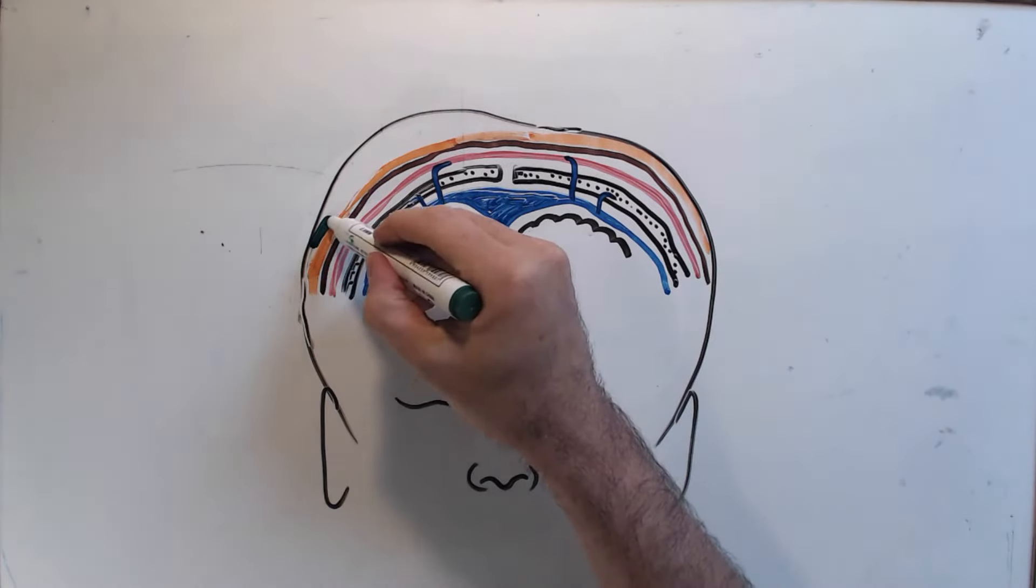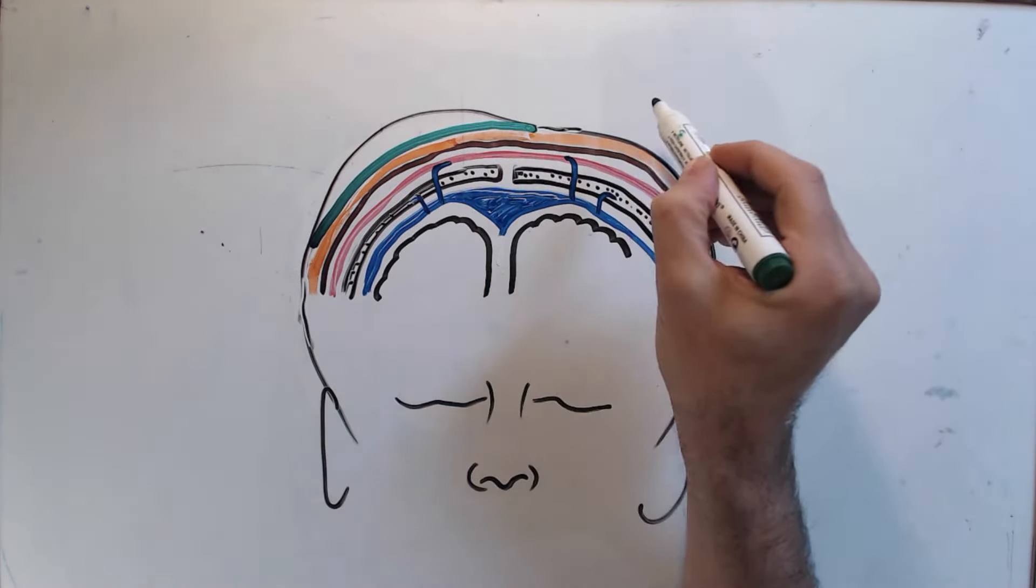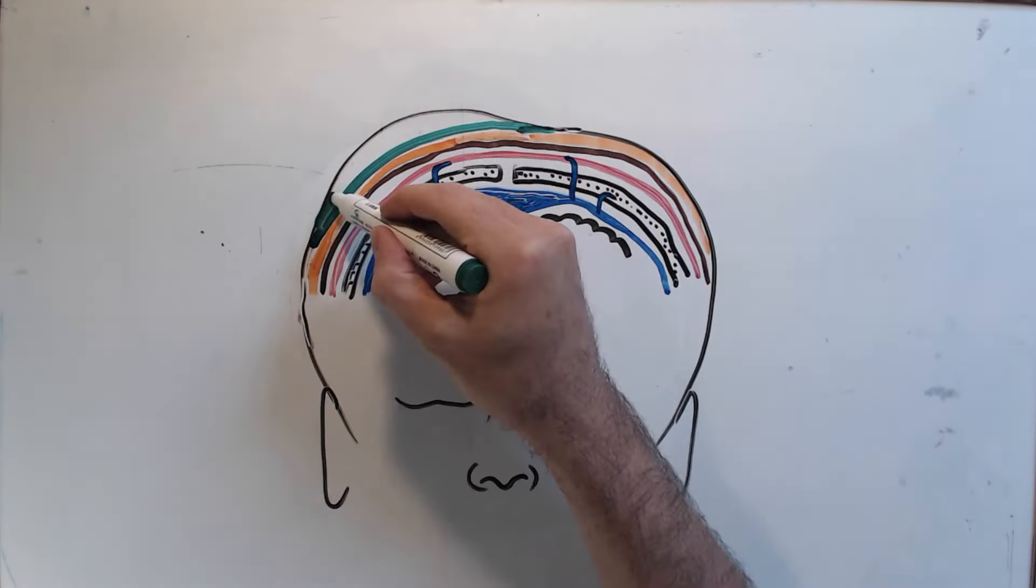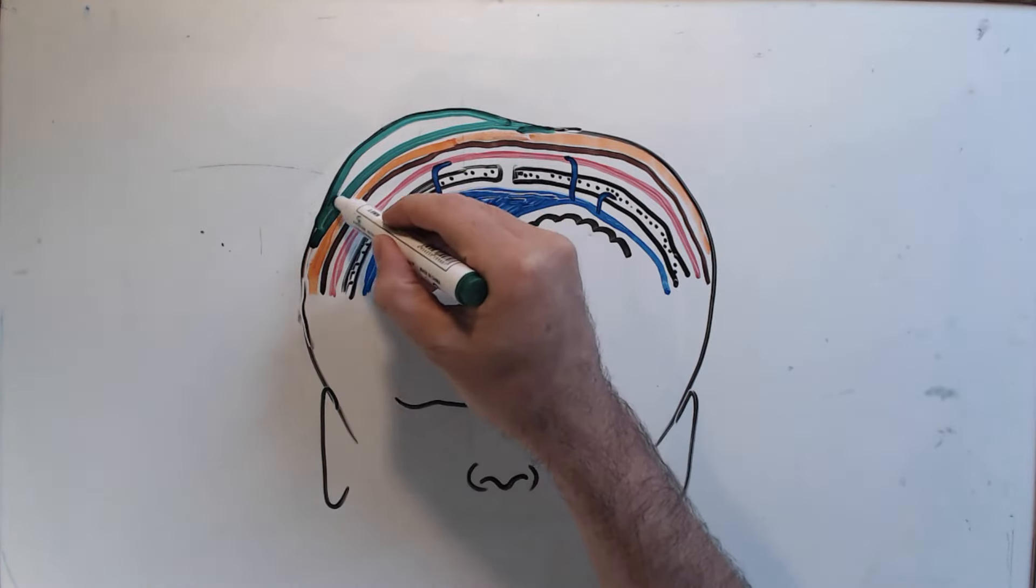that sits on the cranium, across a number of sutures, that helps practitioners differentiate between caput succedaneum and cephalohematoma.